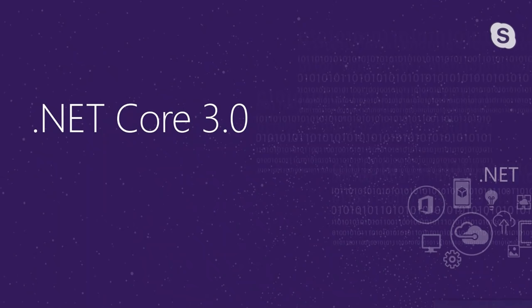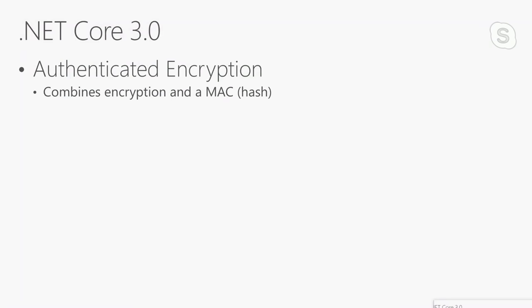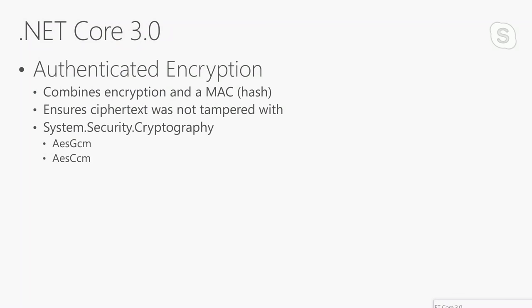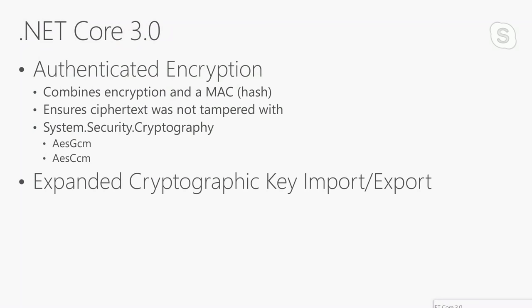A couple of cool things coming with .NET Core 3.0: we'll now have authenticated encryption for the first time. This combines AES encryption and hashing so that I can encrypt data, send it, and not only will you be able to decrypt it, but you'll also be able to use the hash to verify it hasn't been tampered with. There are two new classes in .NET Core 3.0 for this. They've also got an expanded list of cryptographic key formats that can be imported and exported compared to what we had in the past.